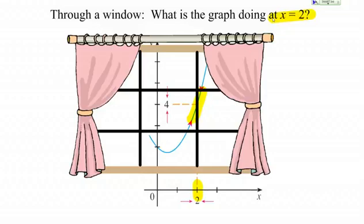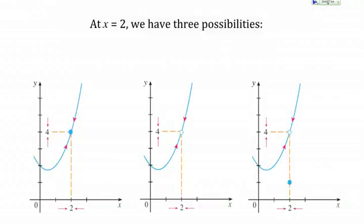It looks like it's 4. If the graph went like that, it would be 4 — a point right there. The thing is, we don't actually know that for sure. If we move the window, it could be that we have a point at 4, which is what we guessed, but there could actually be a hole at 4, or there could be a point somewhere else that's not at 4.